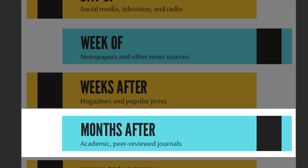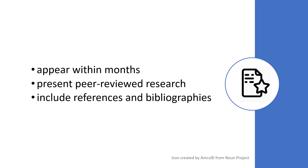Academic peer-reviewed journals present information months after a topic has appeared or an event has taken place. The research and peer-review process takes months, and therefore you will not find academic journal articles on a topic or event that happened yesterday. Unlike other publication types, articles from academic journals include references and bibliographies that point readers to the research sources.